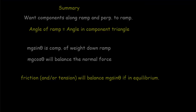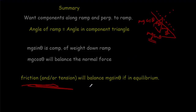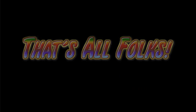To summarize: first, for an incline consider components along the ramp and perpendicular to the ramp. Second, the angle of the ramp theta equals the angle in the component triangle. Third, the component of weight parallel to the incline is mg sine theta, and the perpendicular component is mg cosine theta — the latter balances the normal force while mg sine theta provides the acceleration down the ramp. Finally, friction or tension will balance mg sine theta in an equilibrium situation. Thank you very much.